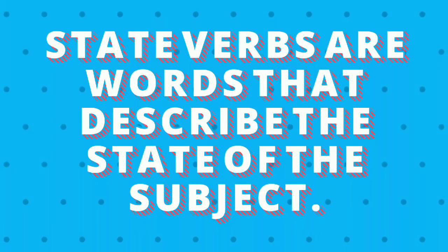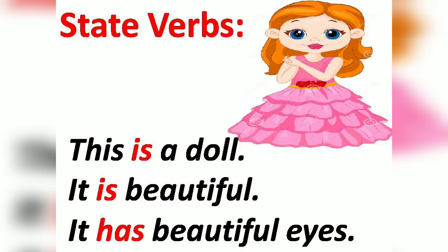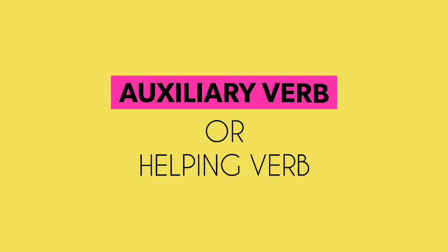Let us discuss about the state verbs that describe the state of the subject. For better understanding, see these sentences: 'This is a doll. It is beautiful. It has beautiful eyes.' Here the subject 'doll' is doing no action. So 'is' and 'has' are the main verbs here — they describe the state of the subject. So we can call them state verbs.